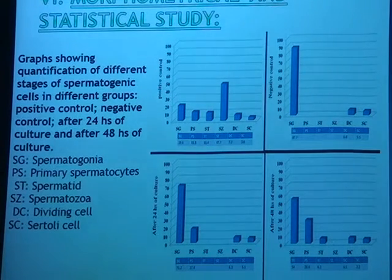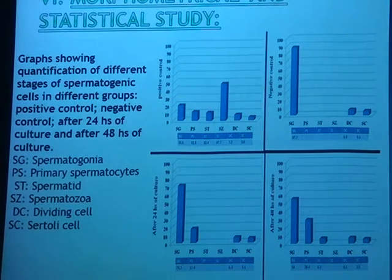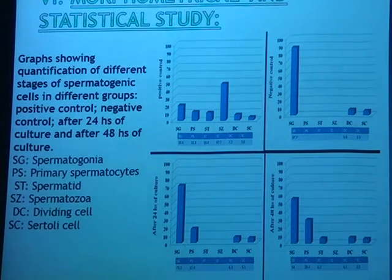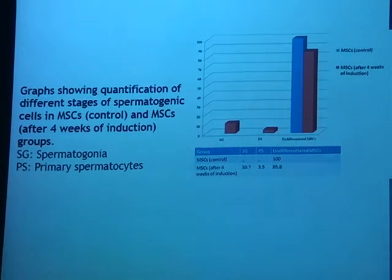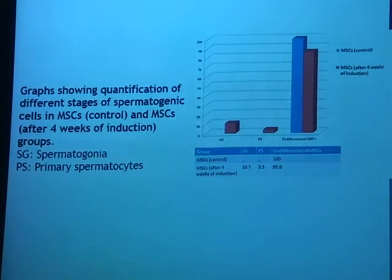The morphometric statistical study of the different stages of spermatogenic cells in different groups shows positive control, negative control, and negative control after induction for 24 and 48 hours. The graph quantifies the different stages of spermatogenic cells in mesenchymal cells: in blue are the non-induced mesenchymal stem cells, and in red are the induced mesenchymal stem cells. Most cells remain undifferentiated, but spermatogenic cells and primary spermatocytes were observed.